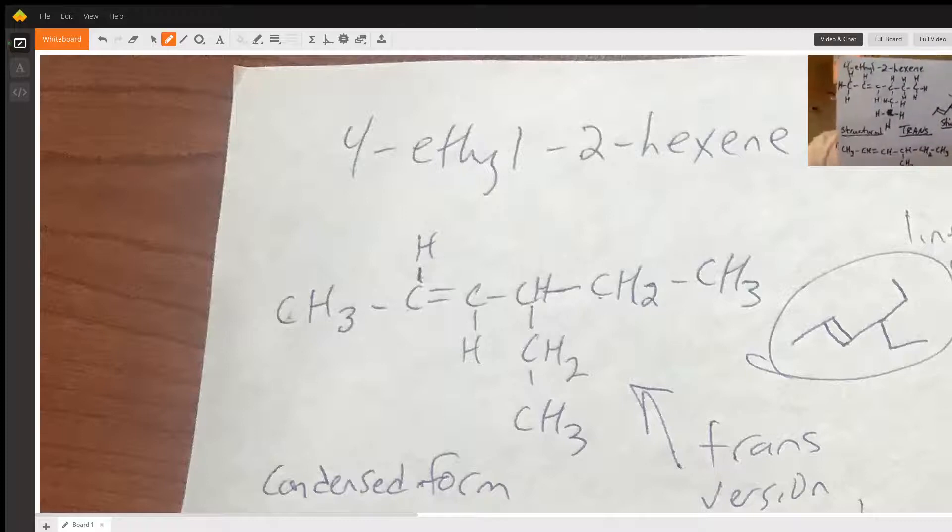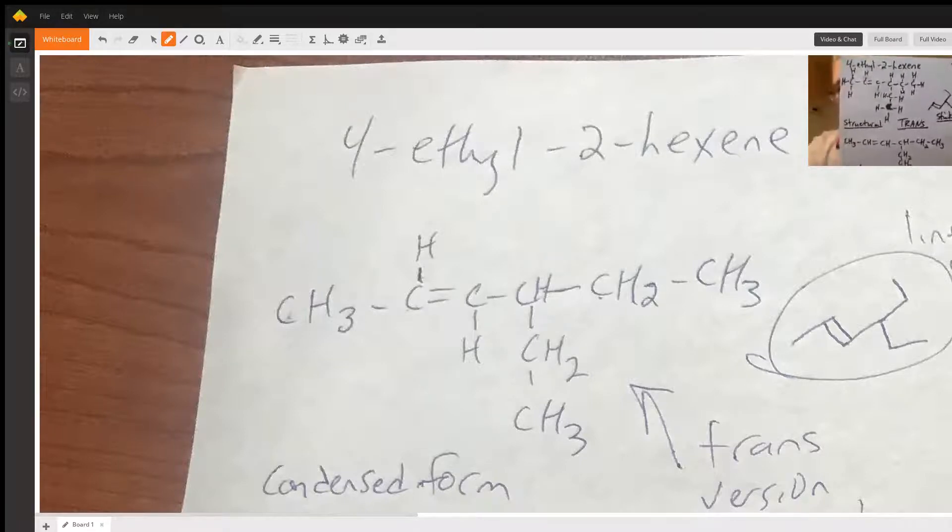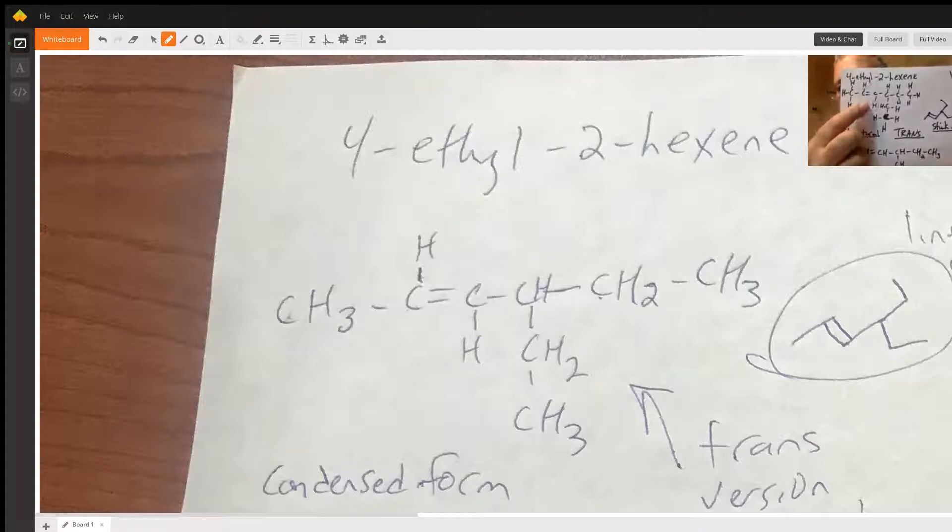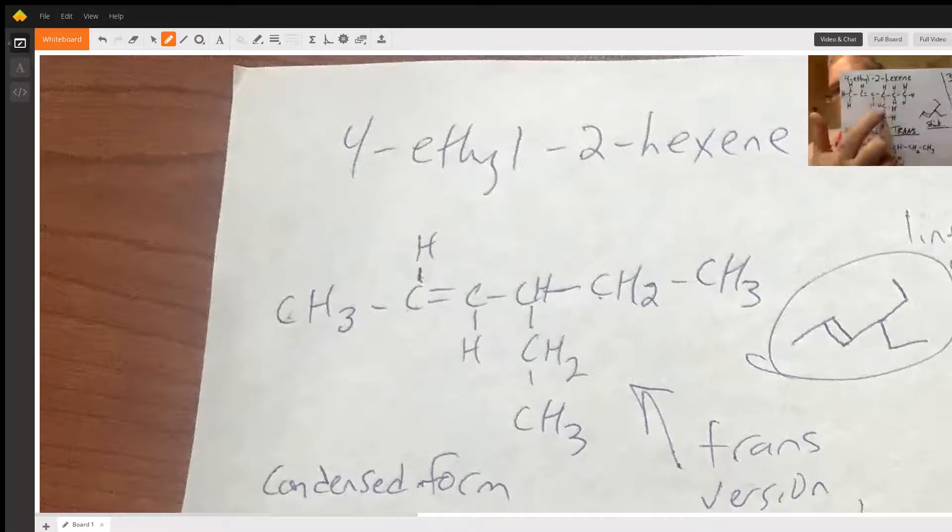You should have six carbons across. On the second carbon, you're going to have your double bonds. In this situation here that I've got showing, I've put the hydrogens on what would be considered a trans position because they're across the double bond. They're not on the same side. And then on the fourth carbon, I've got an ethyl group coming off.